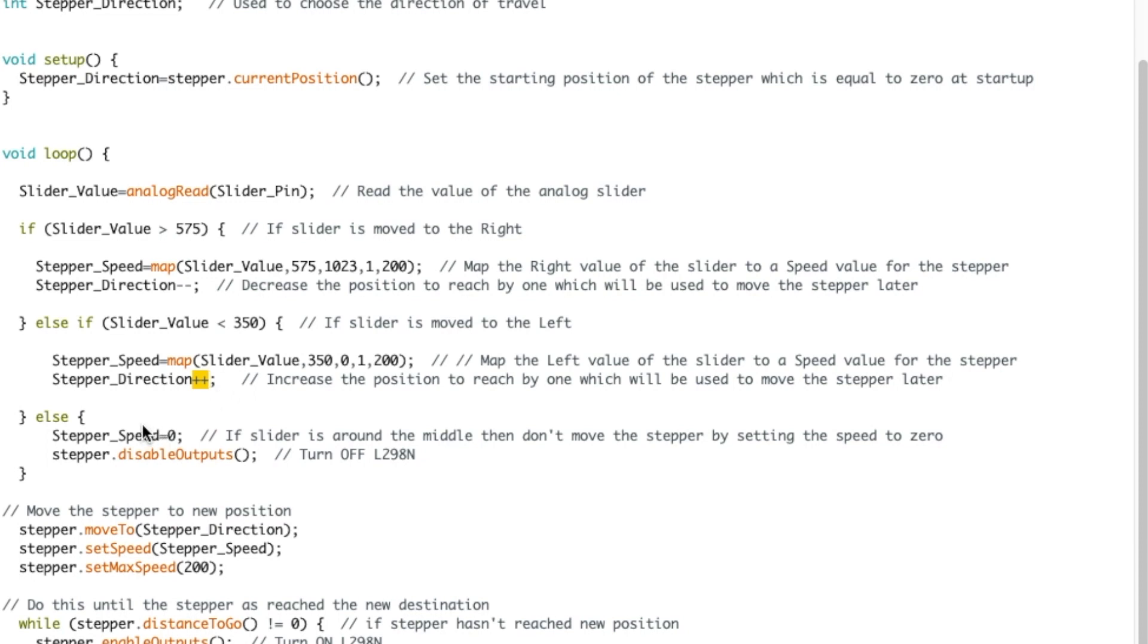Else, I'm in the middle of the analog slider. So I set the speed at zero and I disable the outputs. That will have an effect that the L298 will not provide power to the stepper motor if nothing is happening. That way it will not create heat when the stepper is not moving.